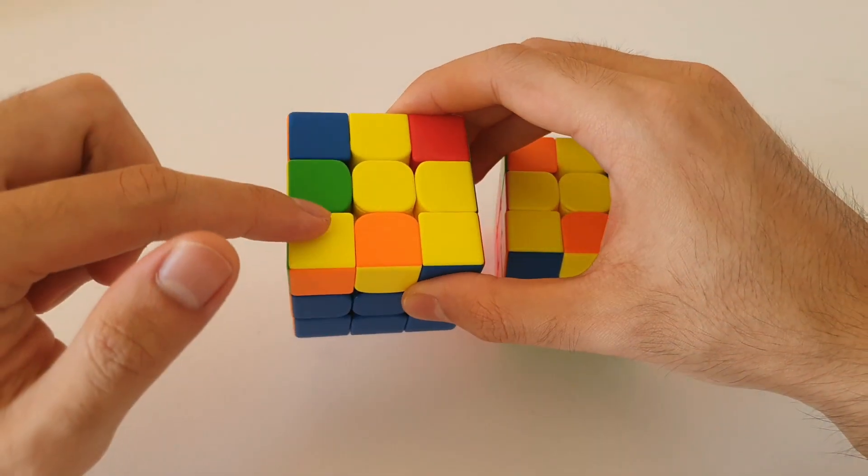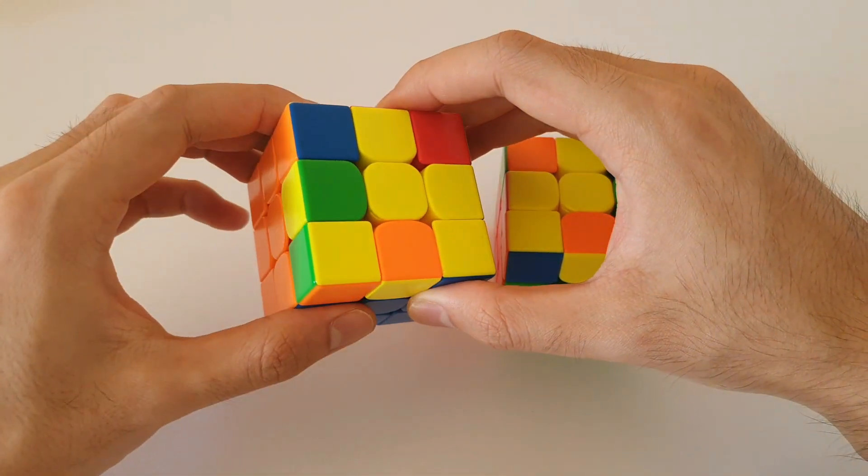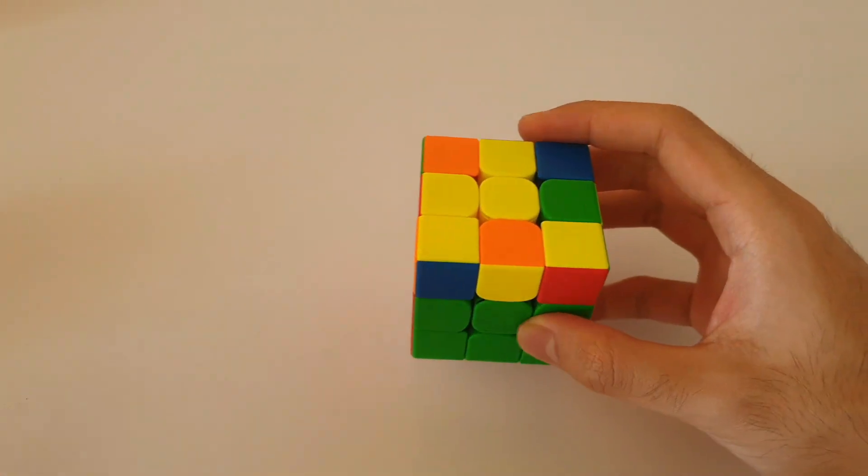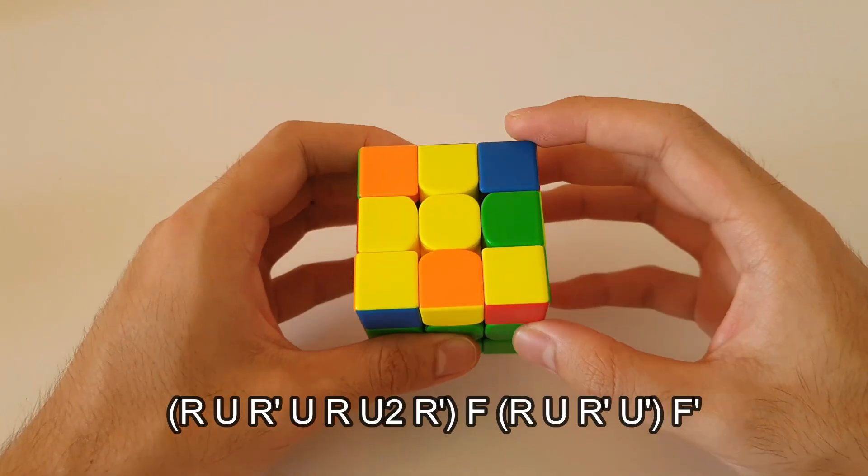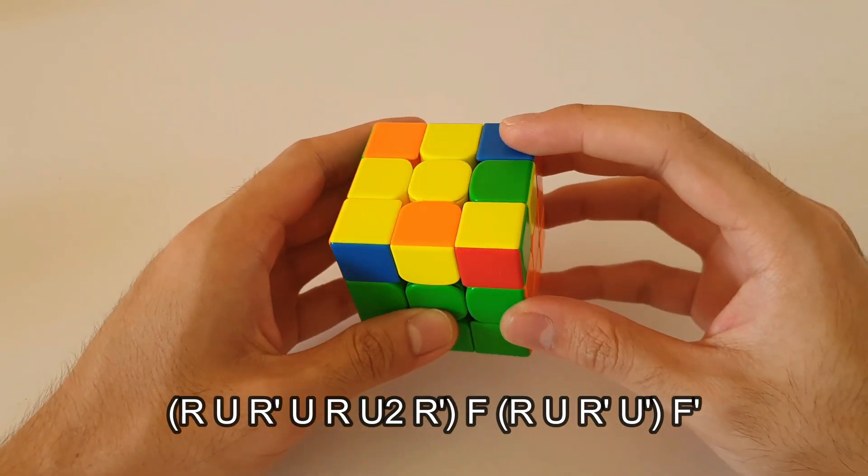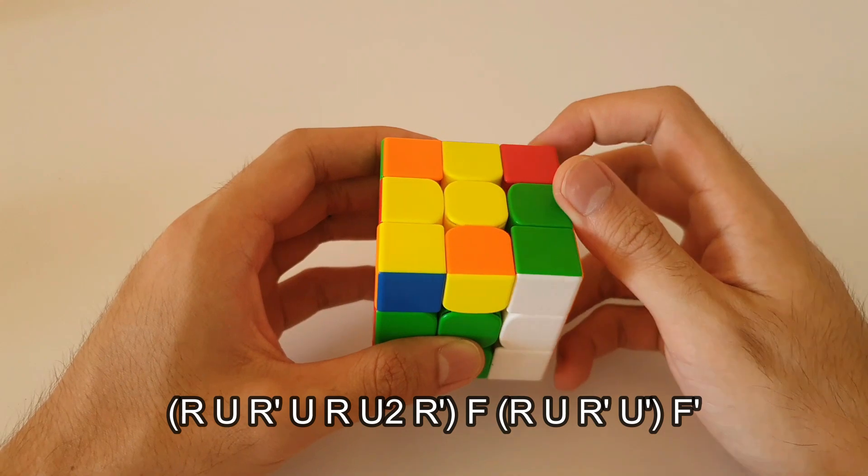With the other case here, it's on the front left so it'll be using the left-handed algorithm. So let's start with this one for now. The algorithm for this one is actually very straightforward. So from this angle, you start off with a sune which I'm sure you all know how to do.